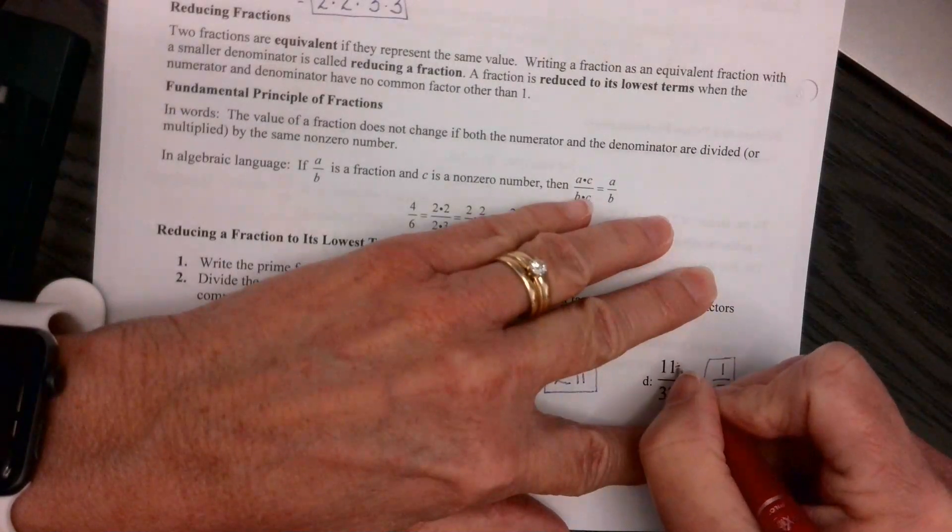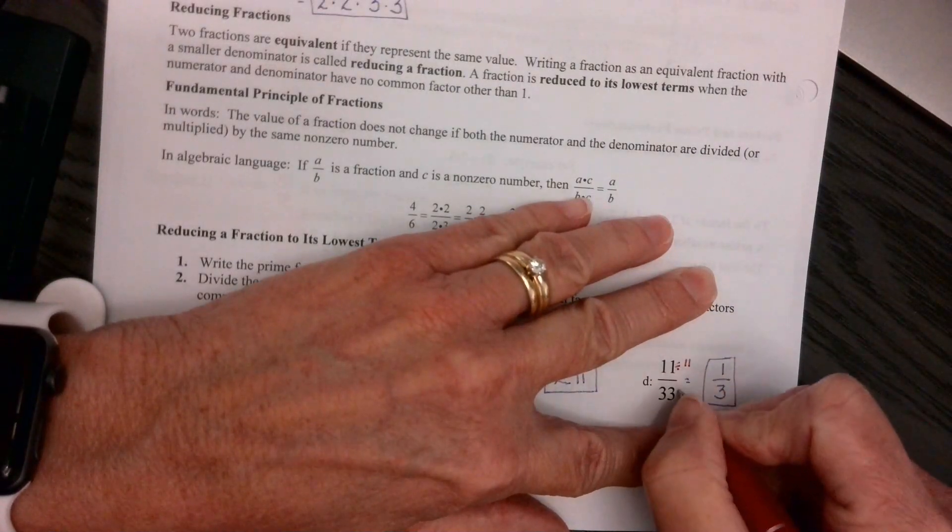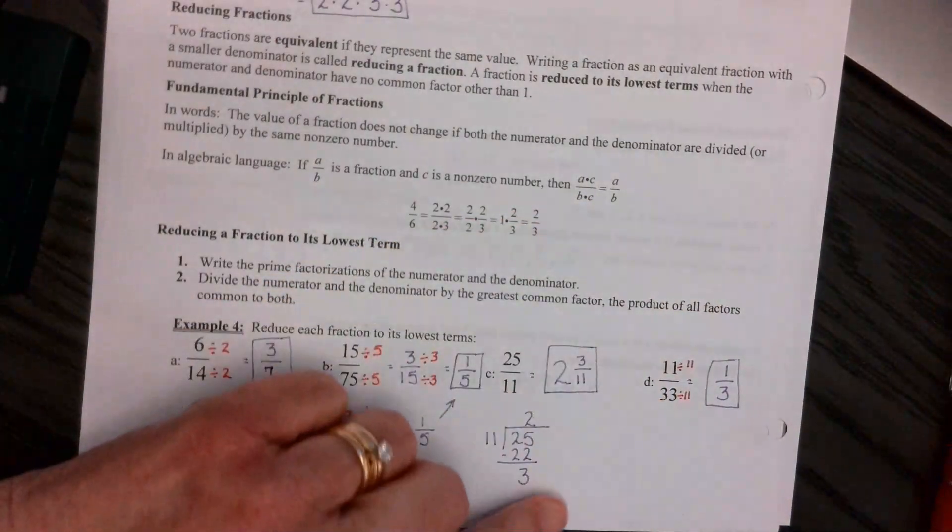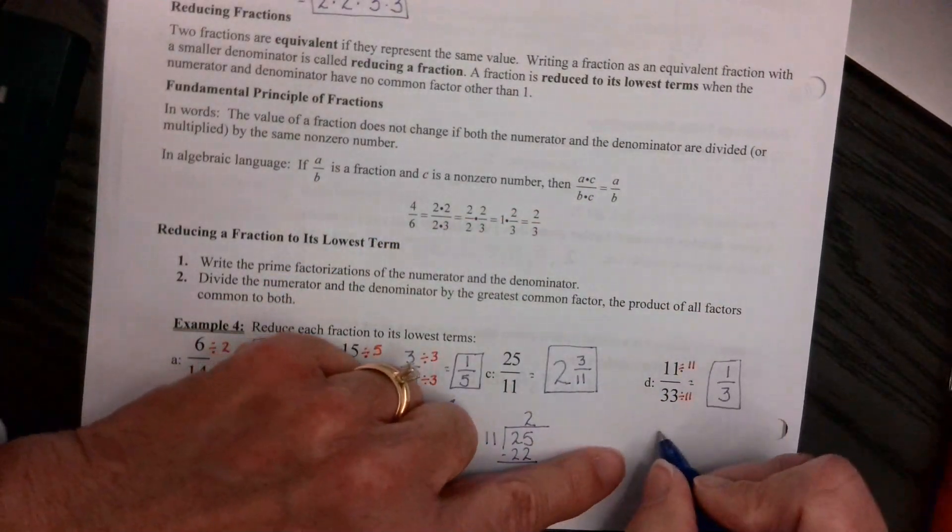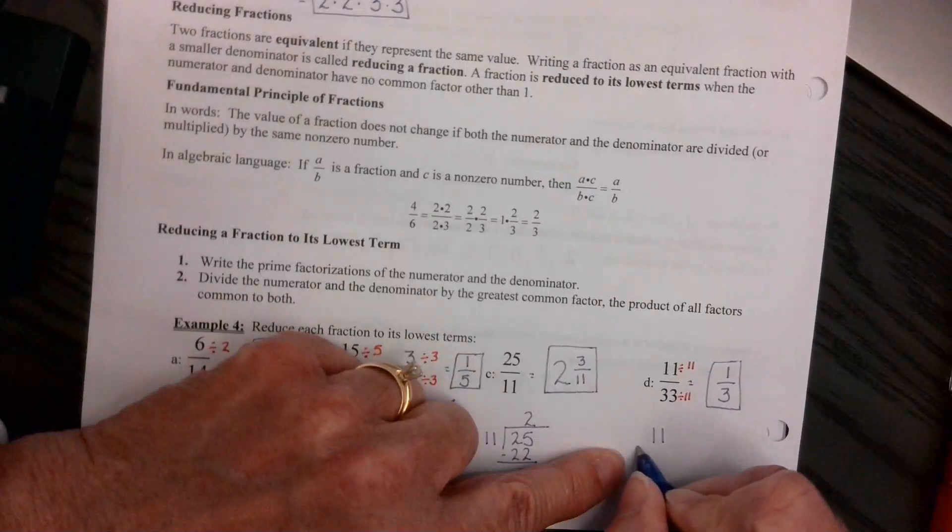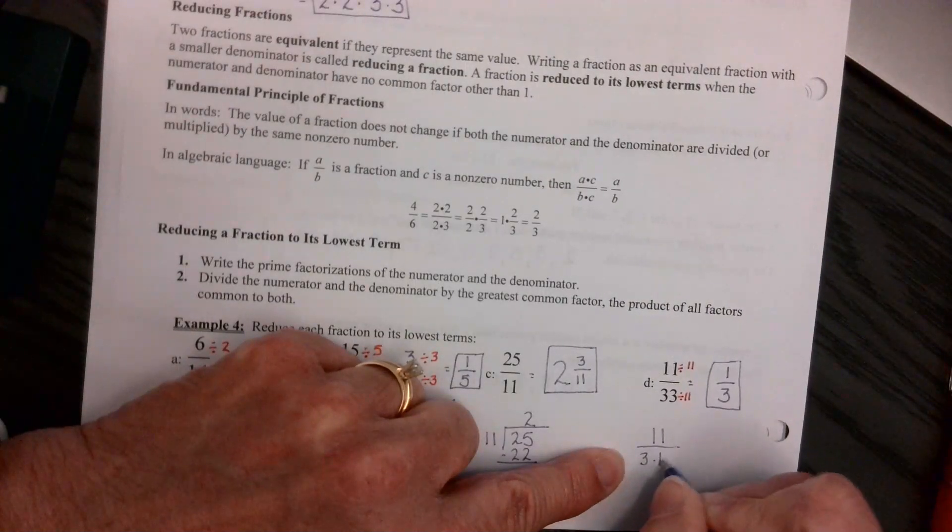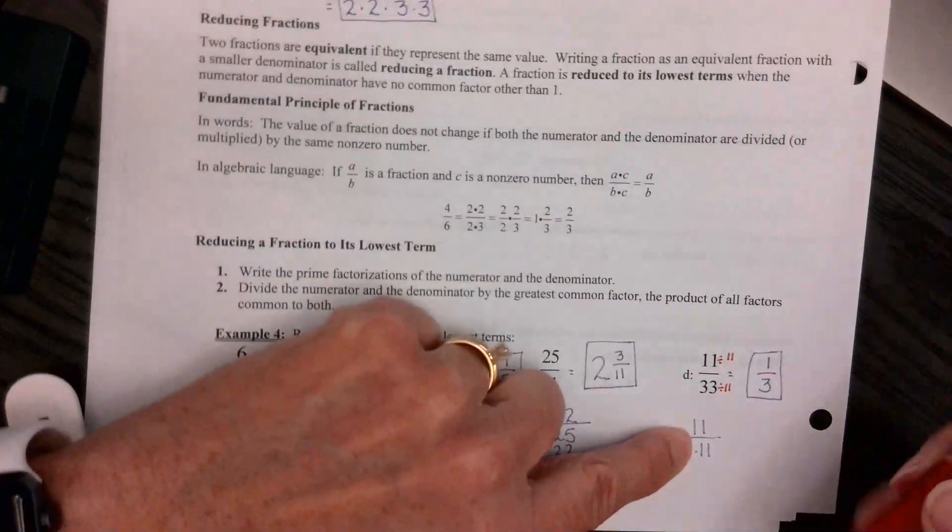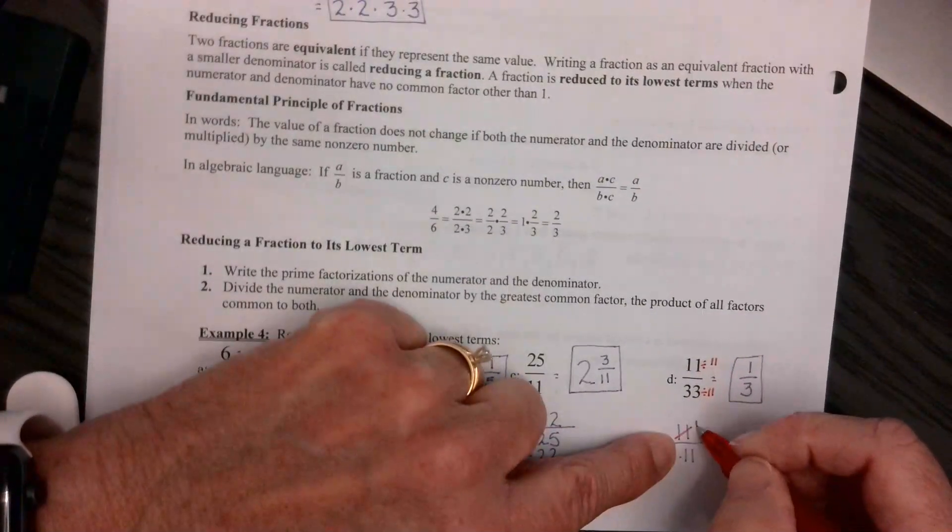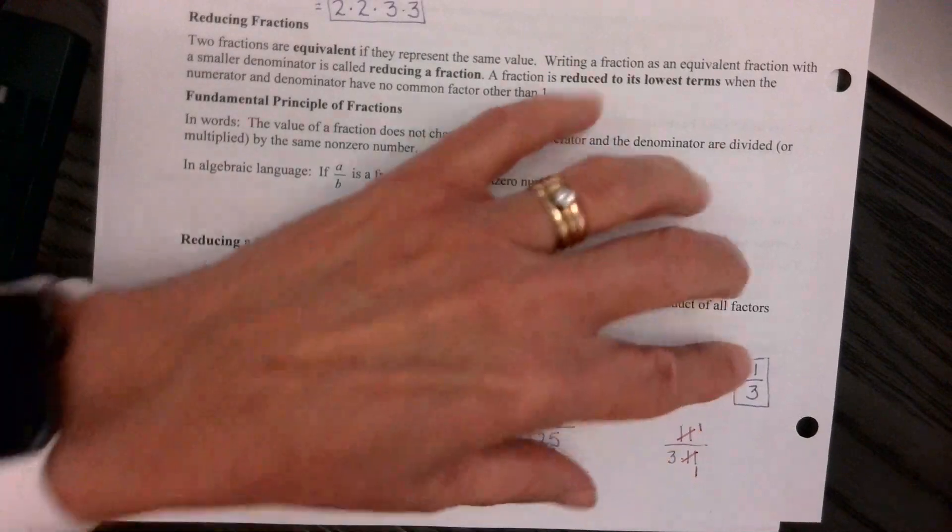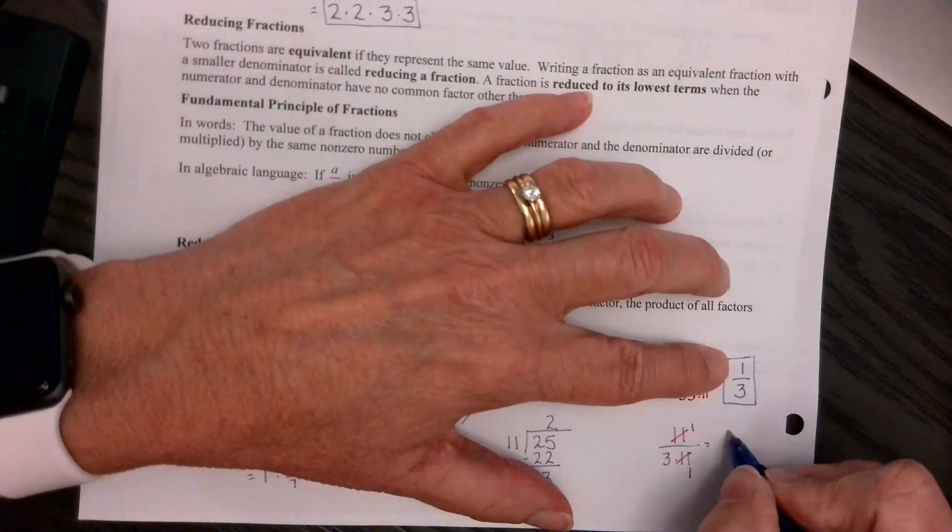And all I did was divide the top by 11 and the bottom by 11. If you did the prime factorization, 11 is prime, so you just bring that down. 33 is 3 times 11. Well, 11 divided by 11 gives us 1. So we have 1 on the top, so we have 1 on the top and 3 on the bottom.